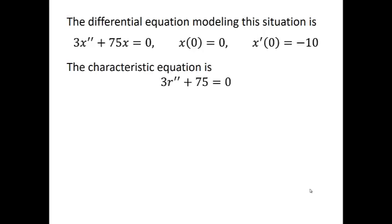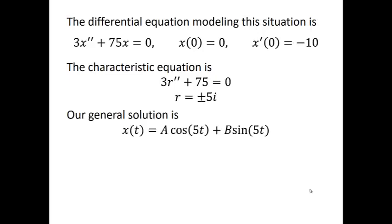To solve our differential equation, we start by writing down the characteristic equation. So it'll be 3r squared plus 75 equals zero. So r is positive or negative 5i. And our general solution then will be a constant A times the cosine of 5t plus a constant B times the sine of 5t.